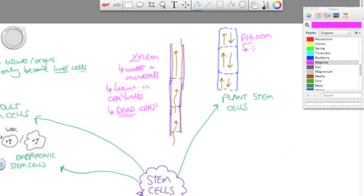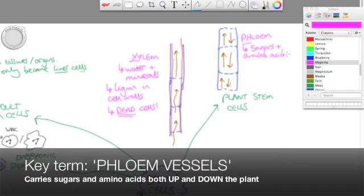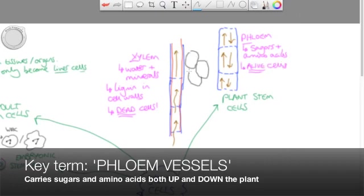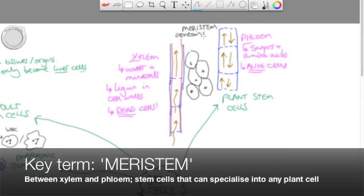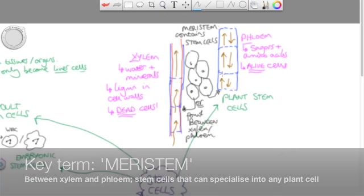Whereas on the right hand side, I'm drawing phloem. And phloem is made of living cells and it can carry sugars such as sucrose and amino acids up and down the plant. And essentially in the middle there, I've drawn the meristem, which is made of stem cells, which can grow into either xylem or phloem.